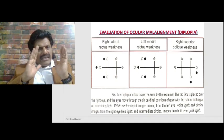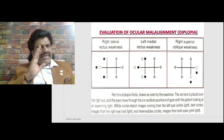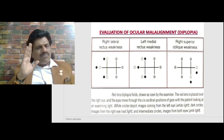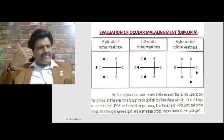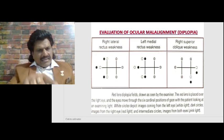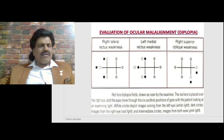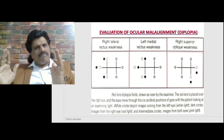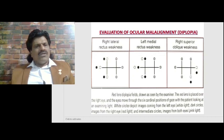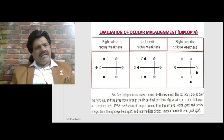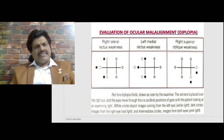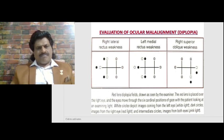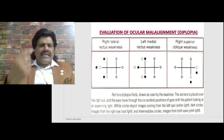With the red lens on the right eye and a light in front of the patient, when the person tries to move the right eye laterally, the weakened lateral rectus does not function properly. The image from the right eye — the dark circle — goes more and more peripherally. Per the first rule, images are separated most in the direction of the weak muscle. In the first diagram, the dark circles move extremely toward the lateral side, indicating right lateral rectus weakness.